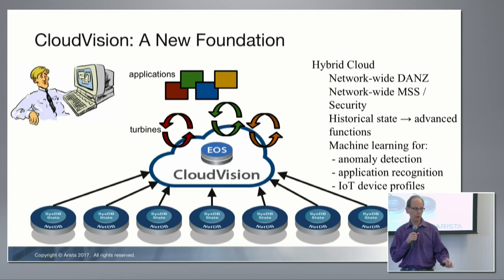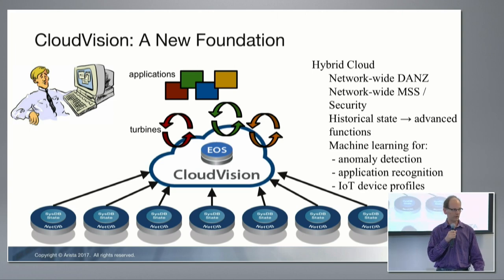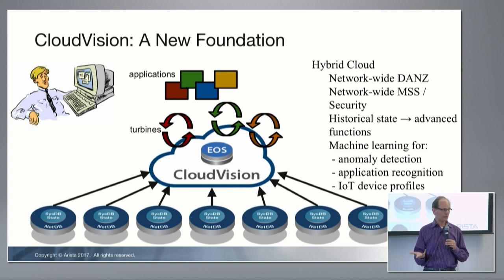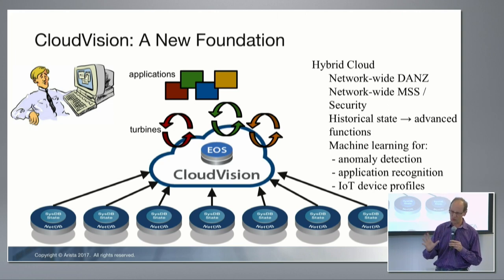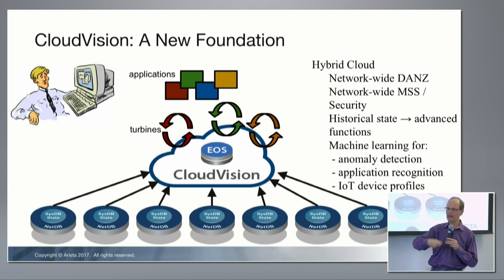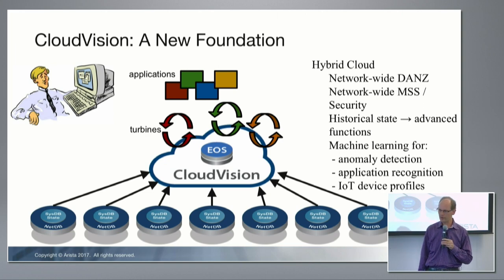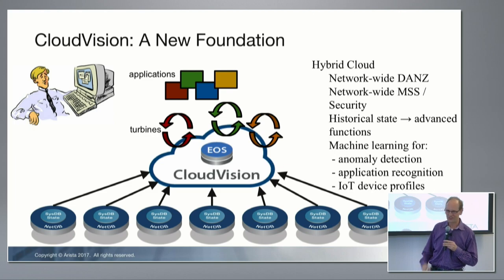I've got a distributed data path and distributed control plane — why is my management plane device-by-device-by-device? With CloudVision, we've been able to get all the state into one place and provide programmability so you can have applications on top, iterate on the management plane, and provide new features and functions without touching the devices. It's going to be very powerful, and I'm hoping there will be some really neat stuff to talk about in CloudVision next time. Thank you all very much.